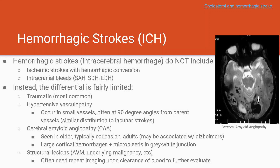Hemorrhagic stroke is very difficult to treat and these patients often do poorly. The only effective secondary prevention is strict blood pressure control. Interestingly, high cholesterol has actually been found to be protective in these patients, so we don't always put them on a statin unless there are other reasons — something to do with stabilizing the vessel walls. Finally, spontaneous ICHs may occur where vessels are disrupted by an underlying lesion, so if there's no clear reason for the ICH, you should repeat imaging in a couple of weeks to rule out an underlying malignancy or vascular malformation.